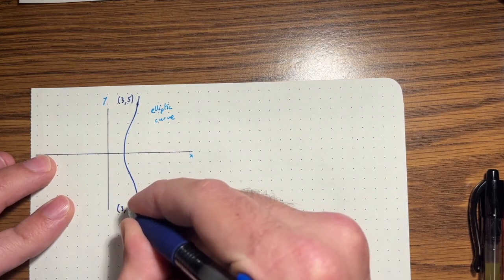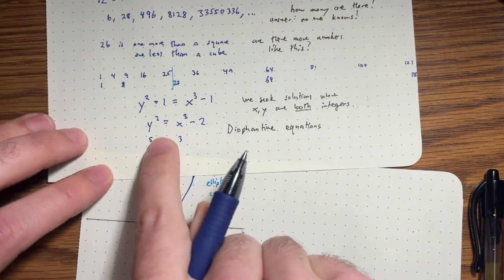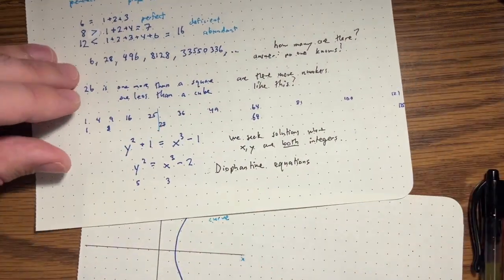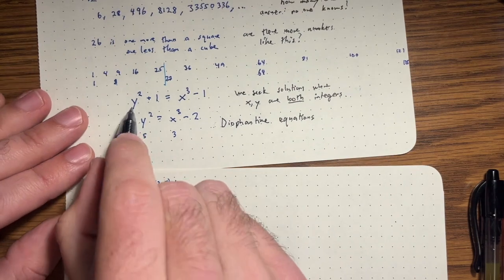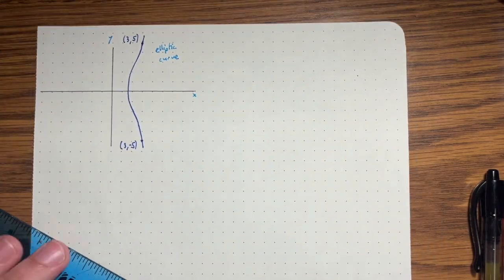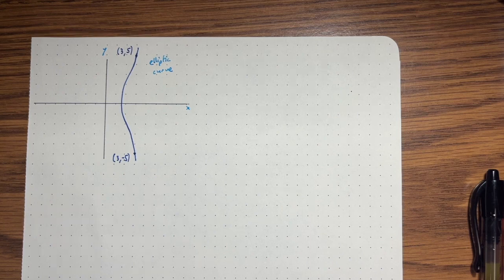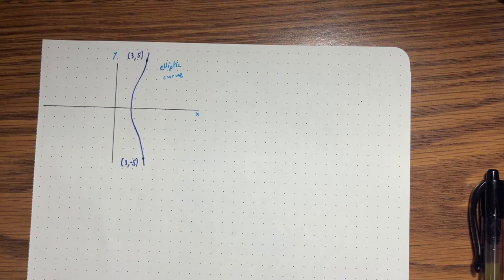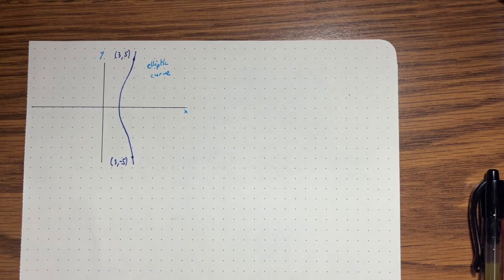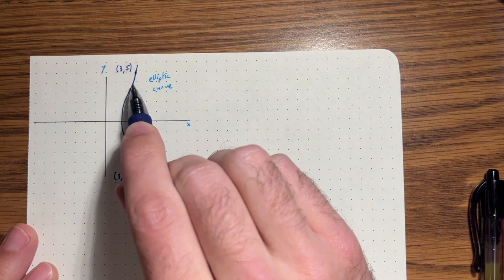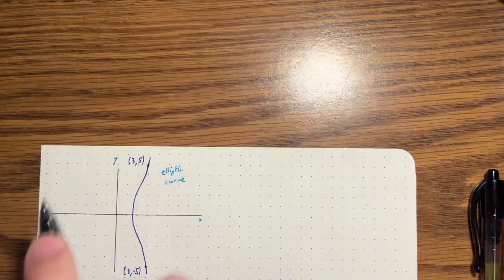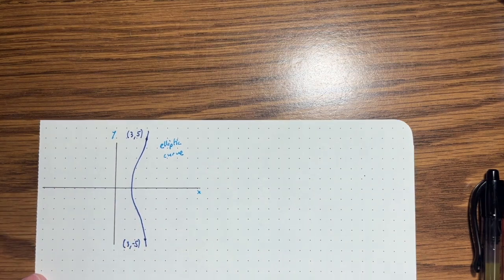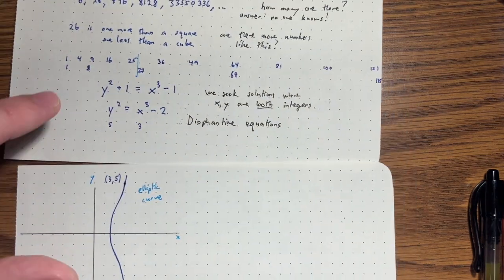Notice that three comma negative five is also a solution to this. That doesn't give us a new number though. If we plug three comma negative five and we just get 26 again, Y squared plus one is 26. This is an example of an elliptic curve. This is one of the things that we're going to study. And the idea is if we can find integer points on this elliptic curve, so points on this curve where both the coordinates are integers, we're going to get a solution to our diophantine equation.